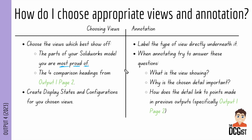Annotation is really important in this output, just like in Output 2. At the bare minimum, label the type of view directly underneath it. When annotating, try to answer three questions: What is the view showing? Why is the chosen detail important? How does the detail link to points made in previous outputs — specifically Output 1 Page 2? If your annotation answers those three questions you'll do pretty well. Keep the annotation short — no more than two or three sentences per drawing.